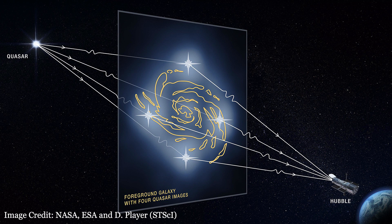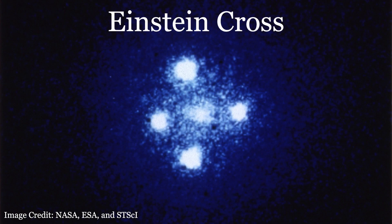Gravitational lensing was important for learning the true nature of quasars, the superluminous cores of very distant galaxies. Multiple images of quasars were first observed in the 1960s as light comes to us along multiple paths, being bent by the gravity of a galaxy between us and the quasar, thus proving that the quasar is much further away than the galaxy. Here in Einstein's Cross, we can see four images of the same distant quasar due to the gravitational lensing of the central galaxy.